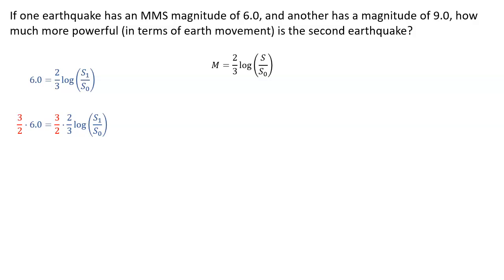So first step, we're going to need to multiply both sides by 3/2. That will simplify on the left, and on the right it will simplify to just 1. So we'll have 9 equals log of s1 over s0.